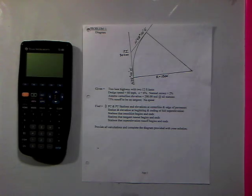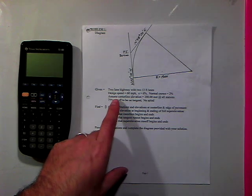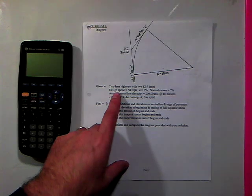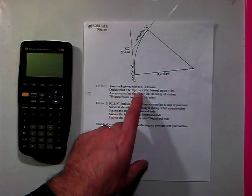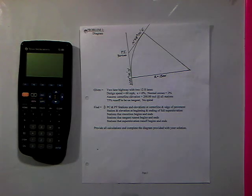Welcome. Today we're going to be going over a super elevation problem. This has a two-lane highway with 12-foot lanes. Design speed is 60 miles per hour. E equals 6%, normal crown is 2%, and we're going to assume that there is no vertical curve throughout this whole super elevation.